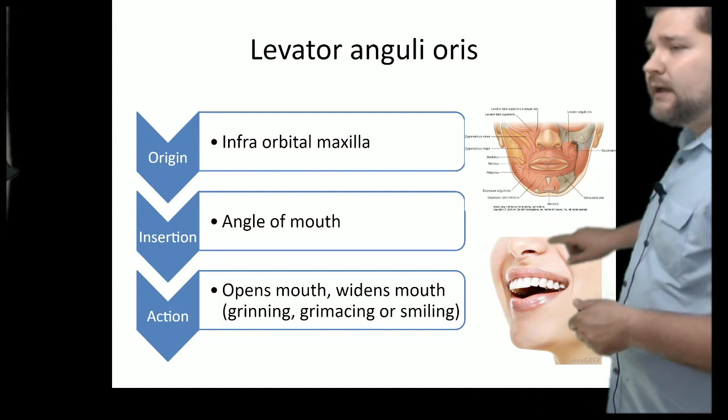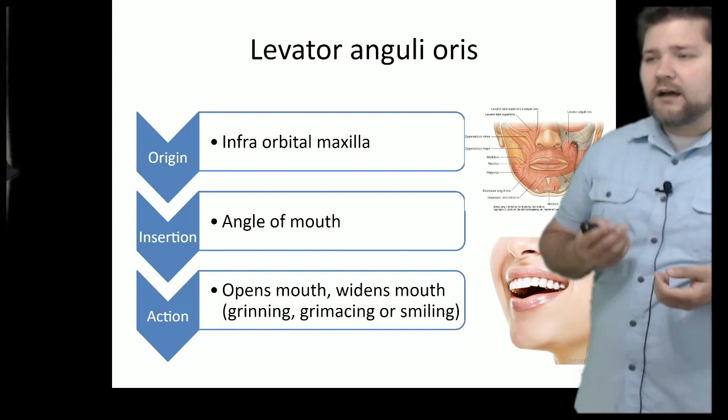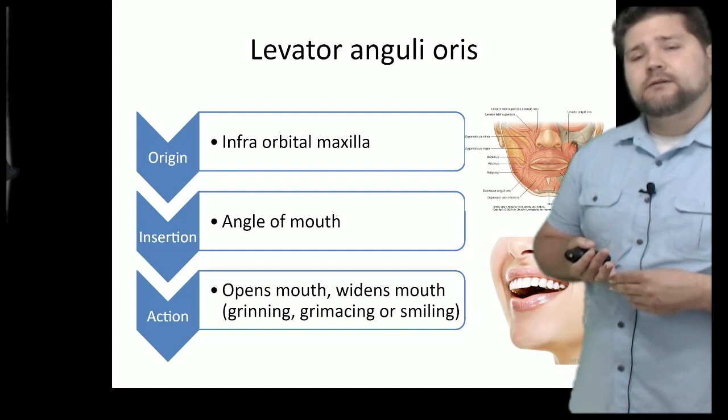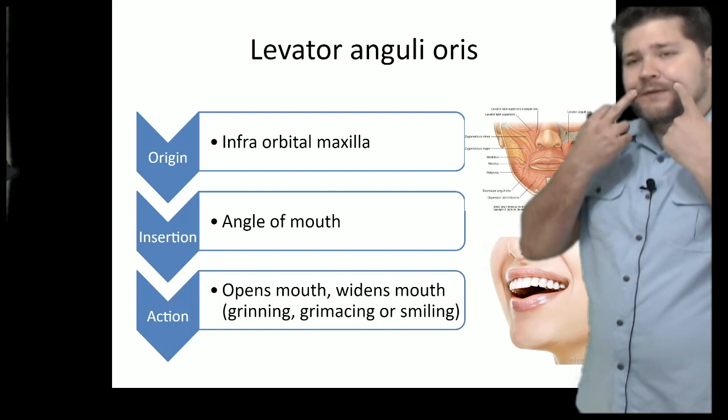The depressor anguli oris is on the lateral aspects of the mouth. It pulls the corners of the mouth downward, contributing to a grimacing or sad expression. Remember: levator muscles raise the lip, while depressor muscles lower it. 'Anguli' means it's more lateral, and 'oris' means mouth. Doing both sides together pulls the lateral lip corners down for that downturned frown.